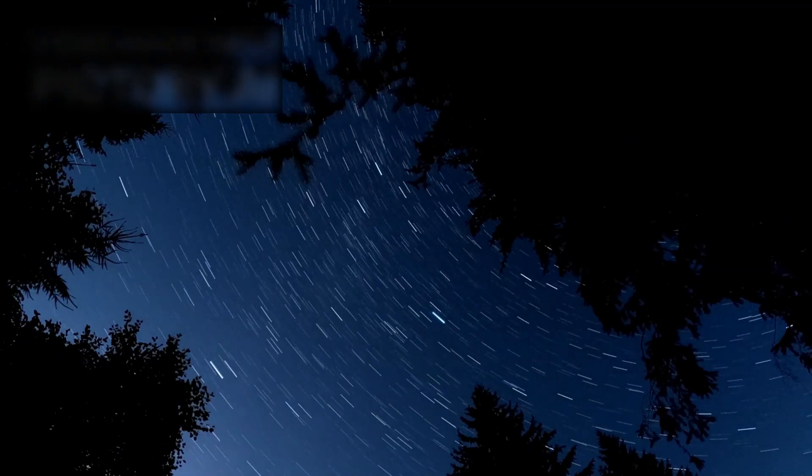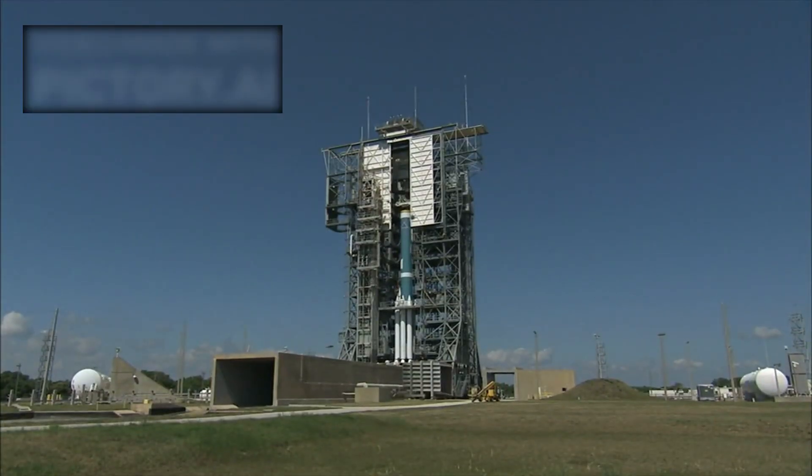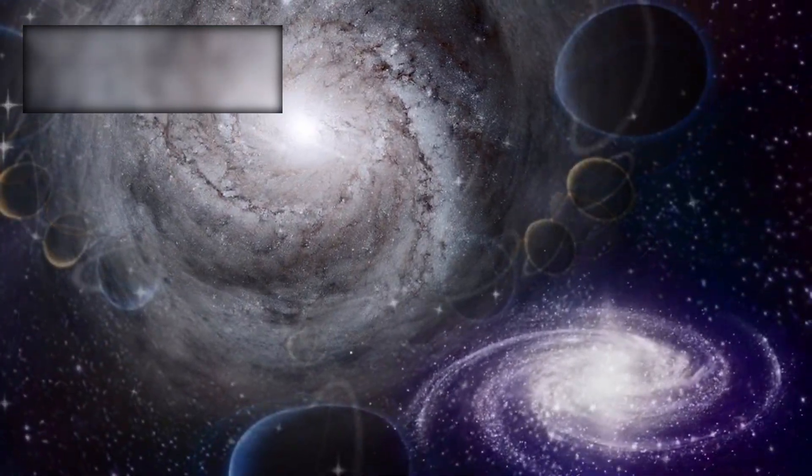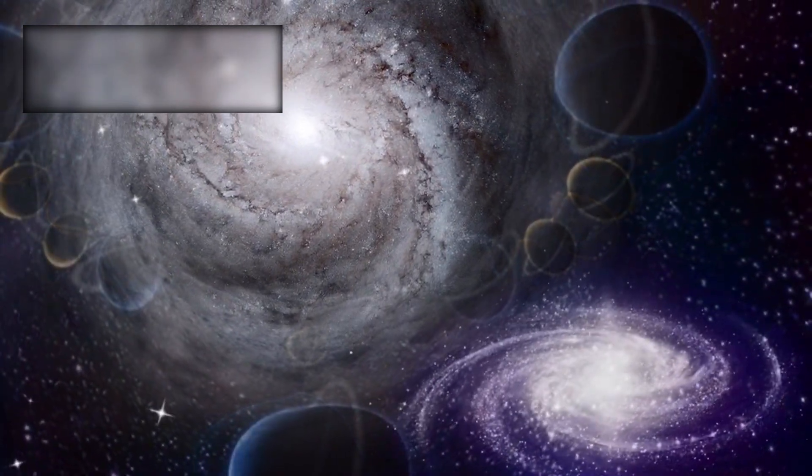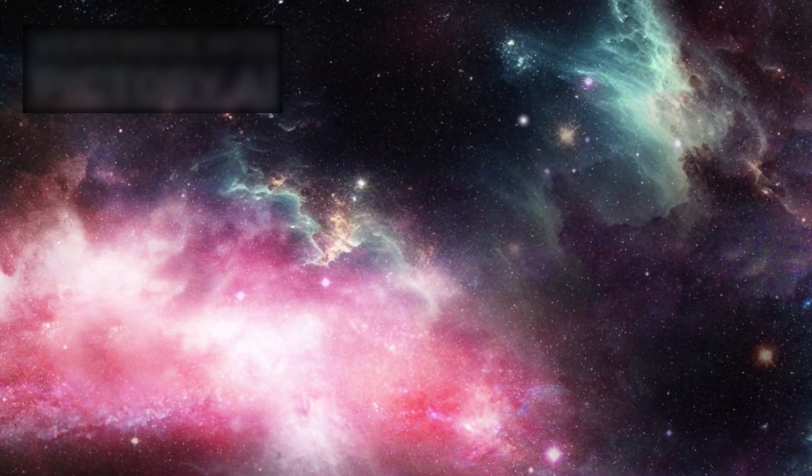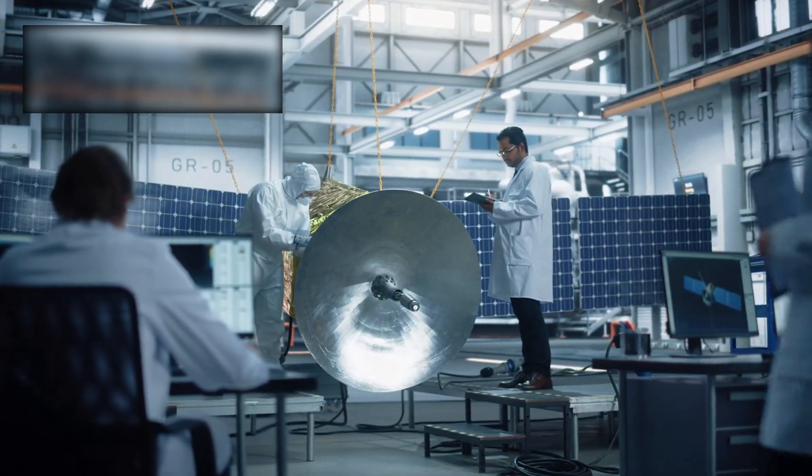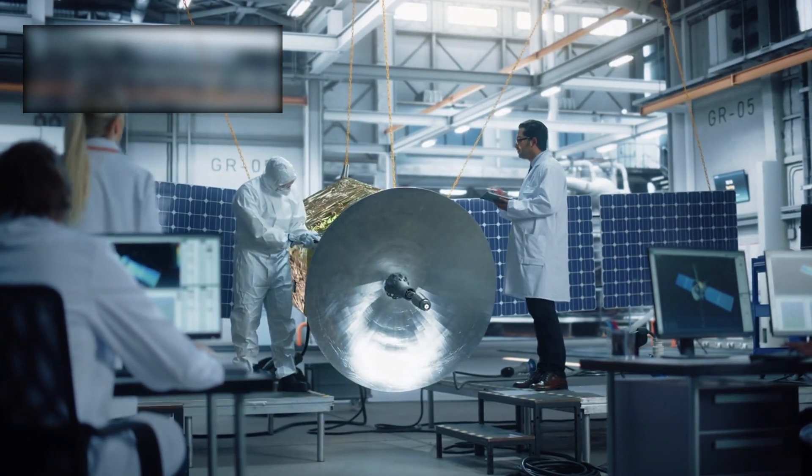As September turns to October, the intensity grows. New observations arrive every hour. Each reveals another layer of the enigma. Polarometric data show the dust isn't fluffy like a comet's tail, nor rocky like an asteroid. It's something in between—structured, almost engineered. The implications are staggering. Whatever formed 3I Atlas, it was born under conditions nothing like those of our Sun. By early October, the first stellar occultations are underway. Teams across Europe, Africa, and South America wait in silence for the faintest flicker of starlight. Each tiny dip adds one more line to the outline of a mystery millions of years old.